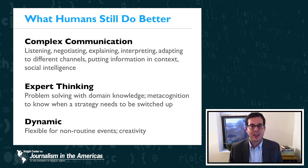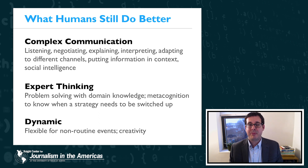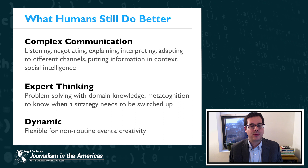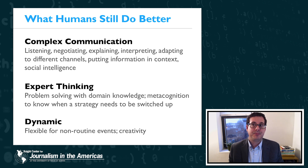Finally, humans still have an edge in terms of their ability to be dynamic in the world. Algorithms are really good at repetitive, routine work, but they're basically not able to flex to a changing world — and the world is always changing. Algorithms will need to adapt if they're ever going to keep up. But people are good at being flexible for non-routine events. I would also say that people have an edge in terms of creativity, originality, and being able to develop novel interpretations of what's going on in the world.